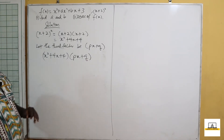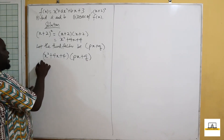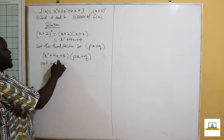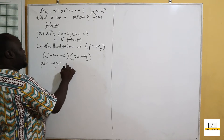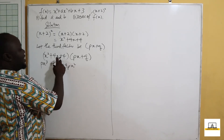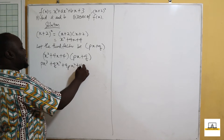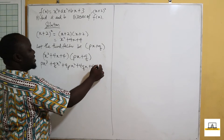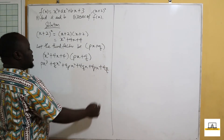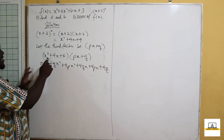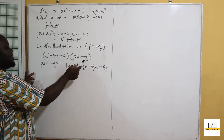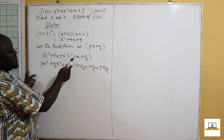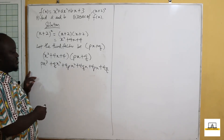So we shall have (x² + 4x + 4) multiplied by (px + q). Expanding: x² times px gives px cubed; x² times q gives qx²; 4x times px gives 4px²; 4x times q gives 4qx; 4 times px gives 4px; and 4 times q gives 4q.